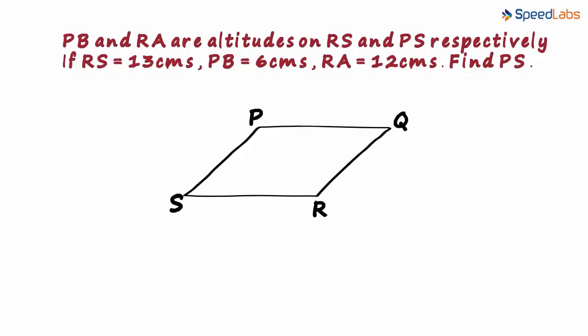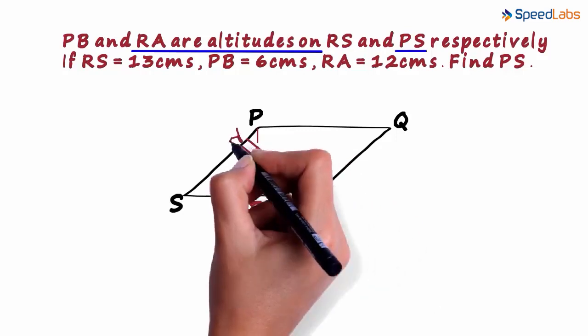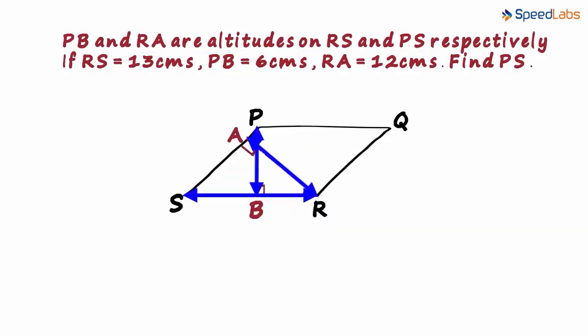This is a very interesting question. PB is an altitude on RS. Let us draw it. It also says that RA is an altitude on PS. We are given these three lengths in the figure and we have to find this length.